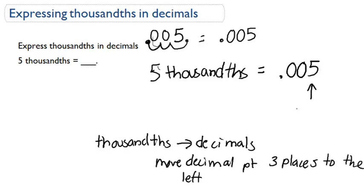And this makes sense because this is the thousandth place. So we know five thousandths is written as .005.